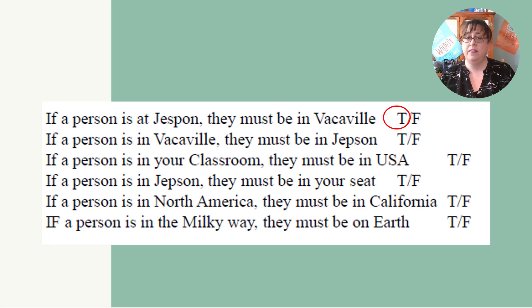If a person is in Vacaville, then they must be in Jepson. Well, that is false. They could be someplace else. They could be at the movie theater. Where else could they be? Come up with some places that they could be and then jot that in right next to it so you understand why it's false.